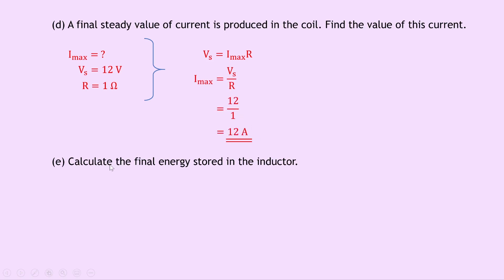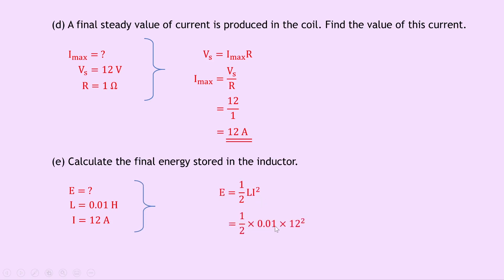Lastly, part E says to calculate the final energy stored in the inductor. We're trying to find energy E. Inductance L is 0.01 Henrys and maximum current I is 12 amps. Using E equals a half LI squared, substituting in gives a half times 0.01 times 12 squared. Putting that into your calculator should give a final answer of 0.72 joules.